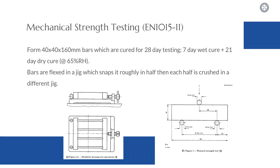To give a brief overview of how mechanical strength testing works: you form a prism, a three-gang prism. They are cured for 28 days — seven days at 95% plus relative humidity and then 21 days at a quote dry cure, which is at 65% relative humidity. The entire time the bars are maintained at 20 degrees. The bars are then taken and flexed in a jig, which roughly snaps them in half to give you a flexural strength, and if you've got good enough equipment it can also give you a modulus of elasticity. Each half of the bar is then crushed in a different jig, and that crushing of the half is your compressive mechanical strength.